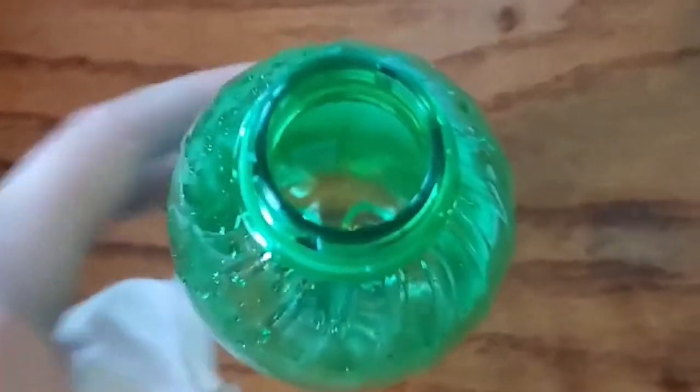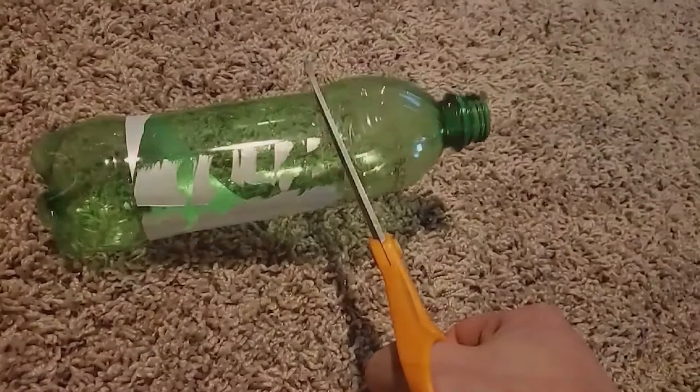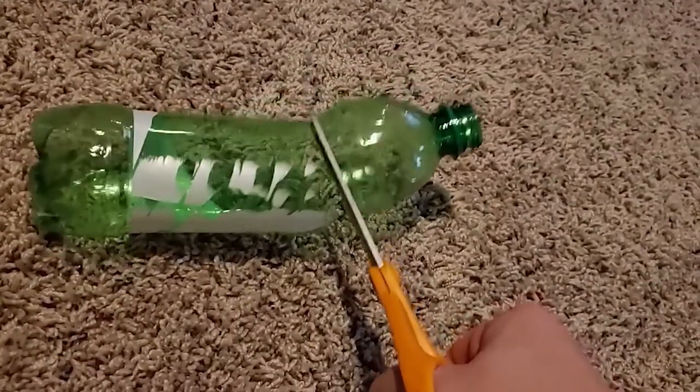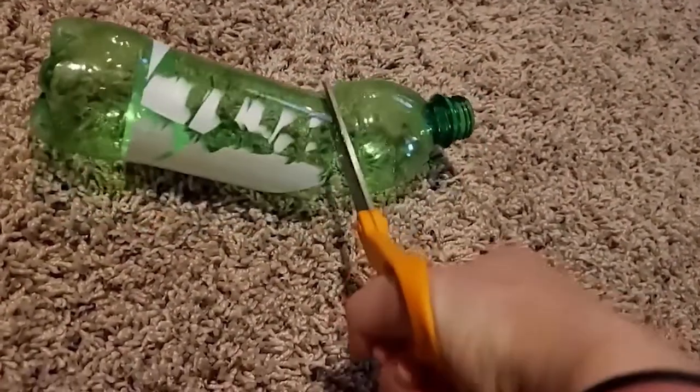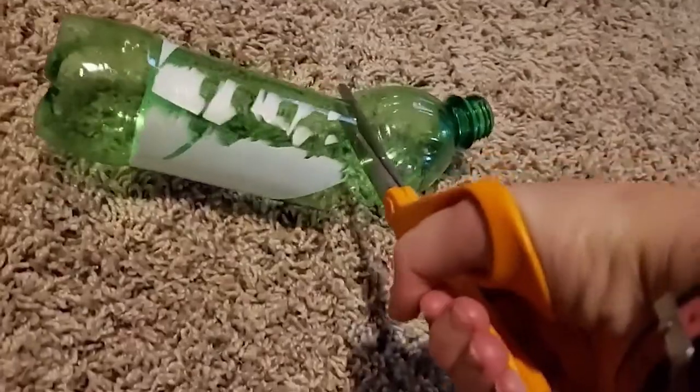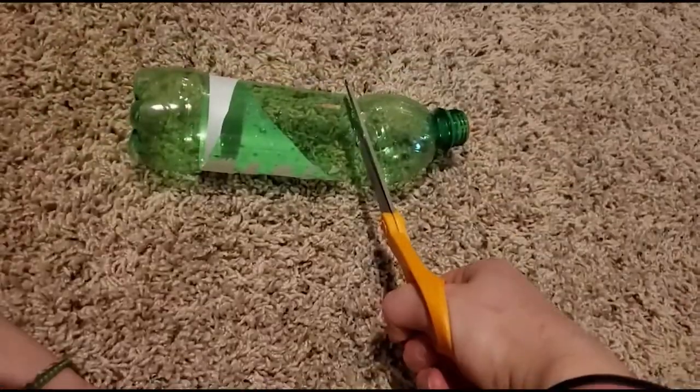So the first thing you're going to do is take your bottle and disinfect the top. I'm just going to use a Clorox or Lysol wipe but you can use whatever you want or just wash it. And after you've done that then you're just going to cut off the top part like this.